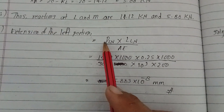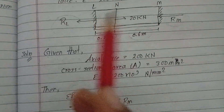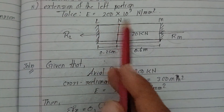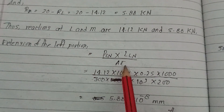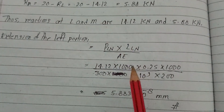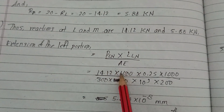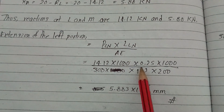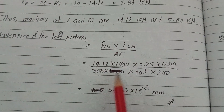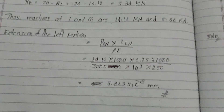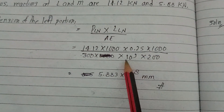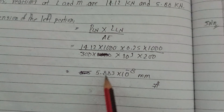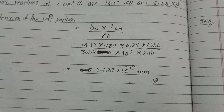Now for the extension of the left portion: extension equals load times length divided by area times E. Substituting: 14.12 kilo Newtons times 0.125 length, divided by area times 200 into 10 to the power 9. Converting units properly, the extension of the left portion equals 5.83 into 10 to the power minus 8 mm.